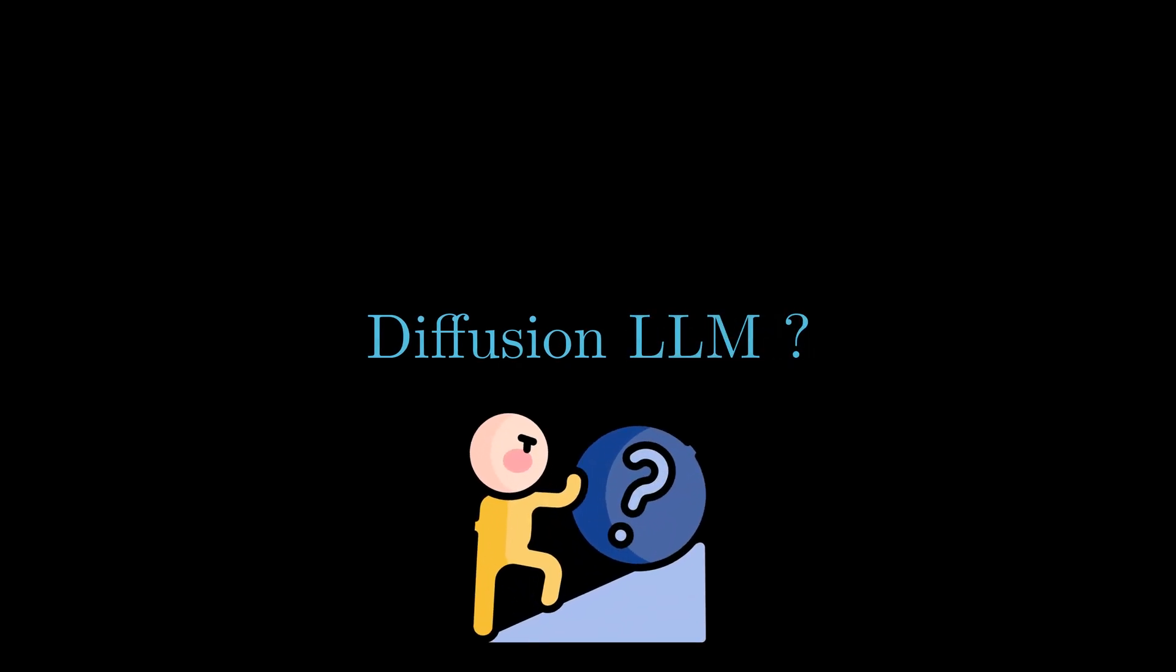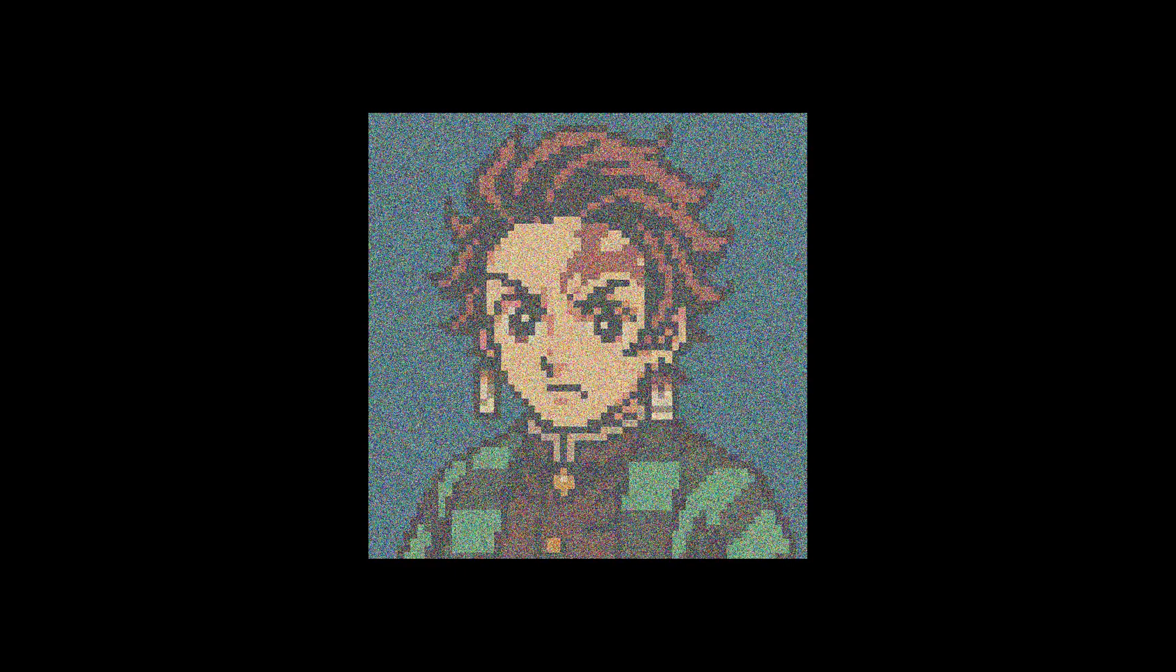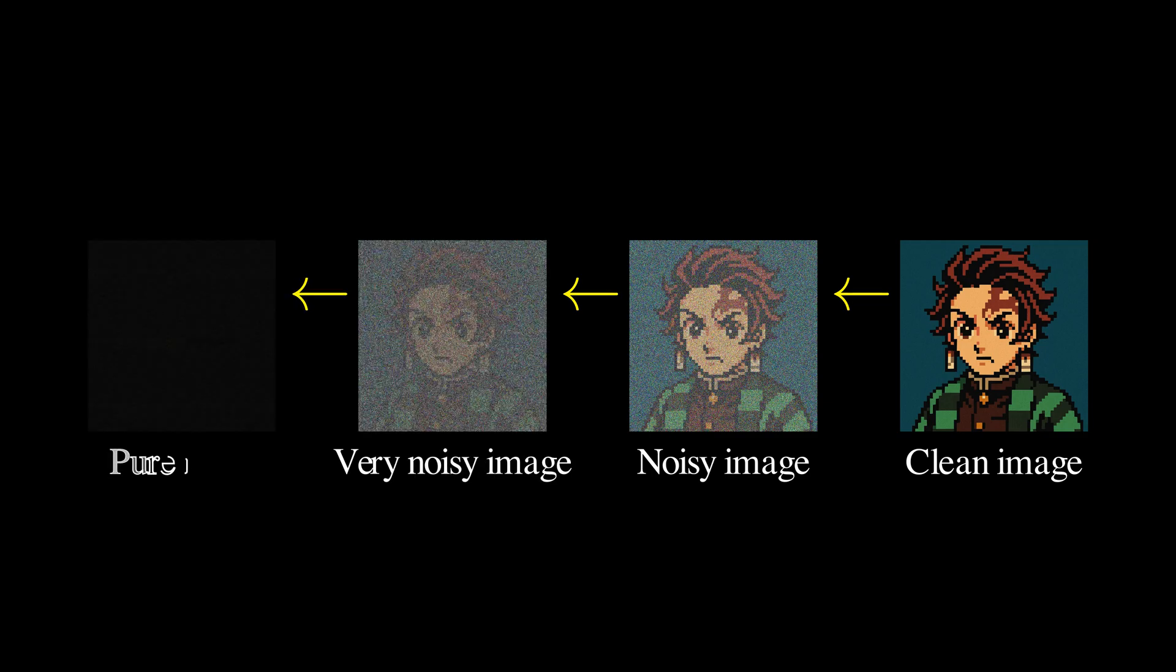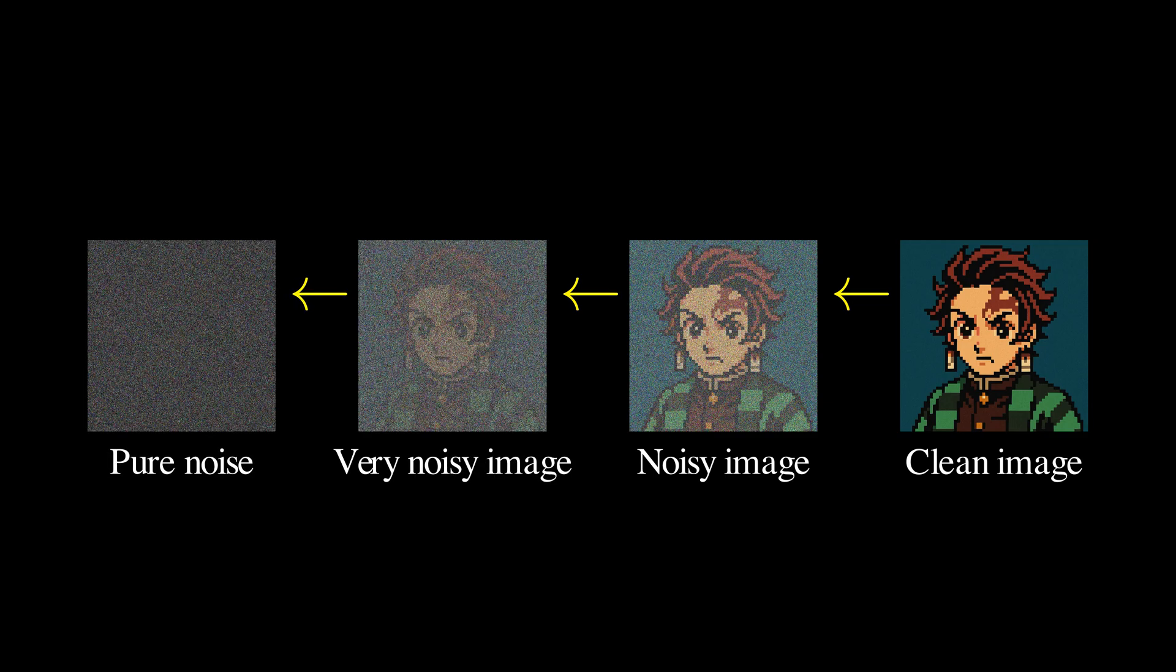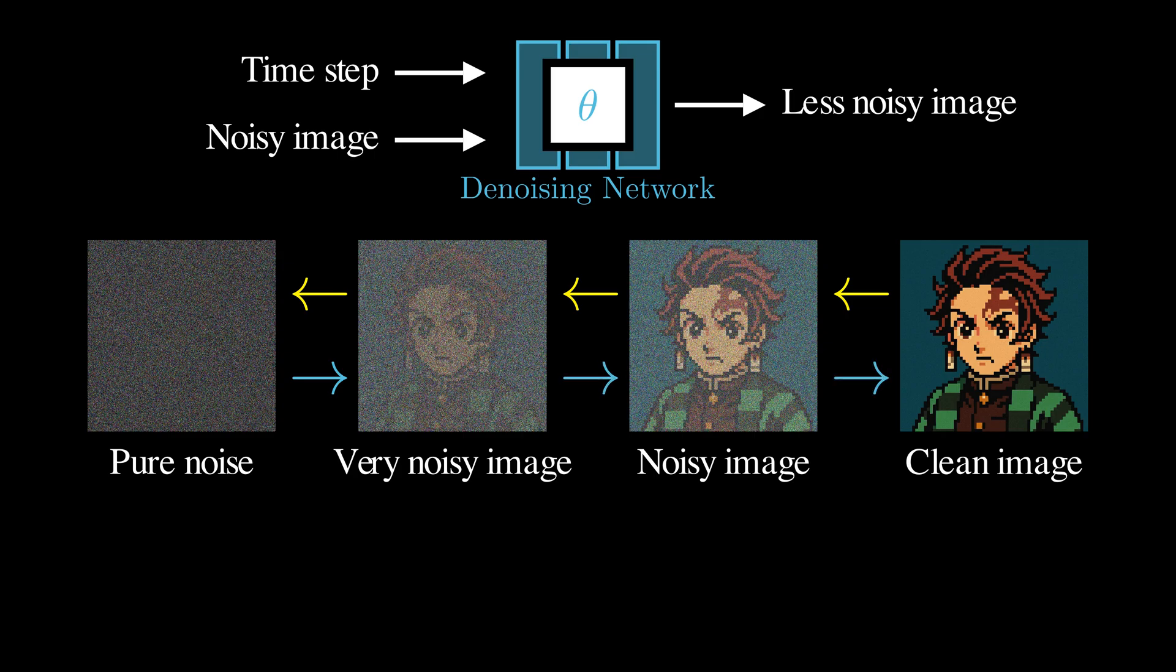How can we use diffusion models for language? Let's first review how diffusion models work for images. We start with a clean image and gradually add Gaussian noise to its pixel values. This gradually transforms the clean data into pure Gaussian noise. We call this the forward diffusion process. With these noisy images, we train a denoising network to reverse this process. This enables us to start with random noise and iteratively denoise it to produce new samples.